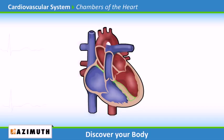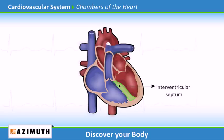The thick wall between the chambers is muscular and called the septum. The wall that separates the ventricles is called the interventricular septum. The wall that separates the atria is called the interatrial septum.